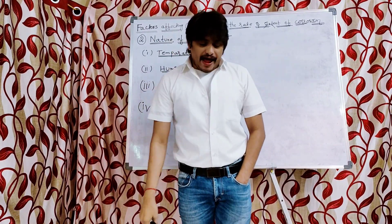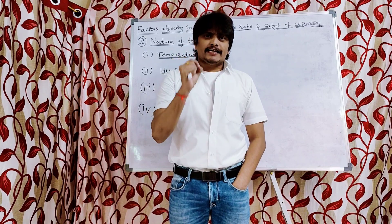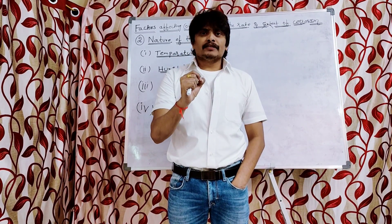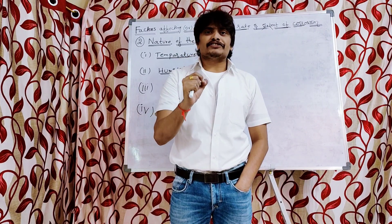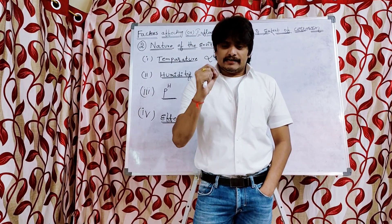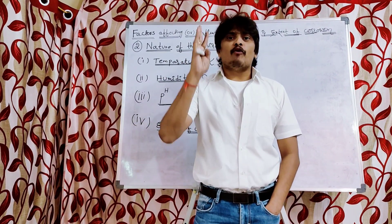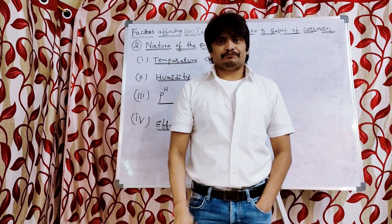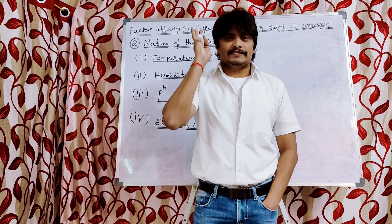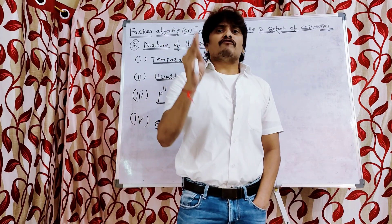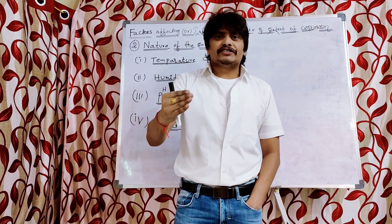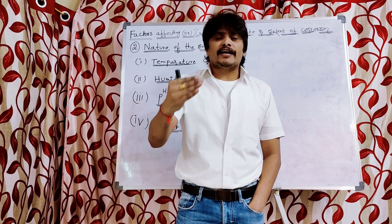Hi students, as part of the factors affecting or influencing the rate and extent of corrosion, today I am going to explain the second broad category: the nature of the environment. In this broad category, we are going to discuss four sub-factors: temperature, humidity, pH, and the effect of oxygen. Let us discuss them one by one.